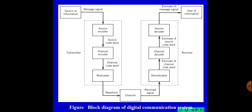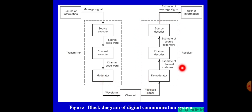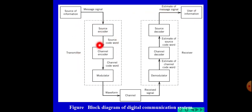The transmitter section includes the source encoder, channel encoder, and modulator. The receiver section includes the demodulator, channel decoder, and source decoder. In between is the channel section. So the overall block diagram has the following sections: transmitter, channel, and receiver, with the user at the end.